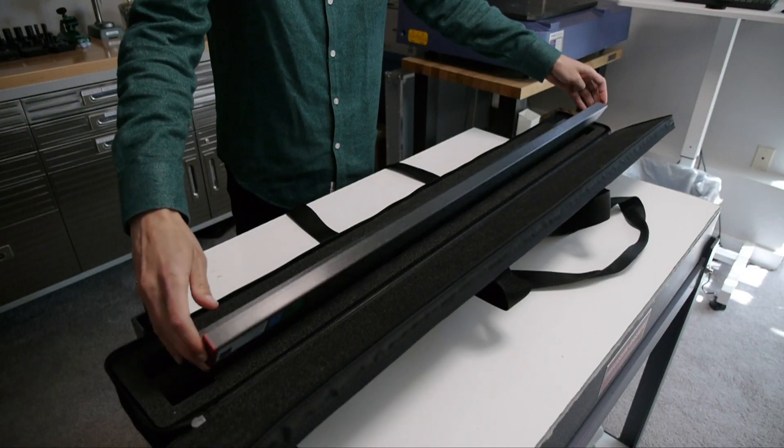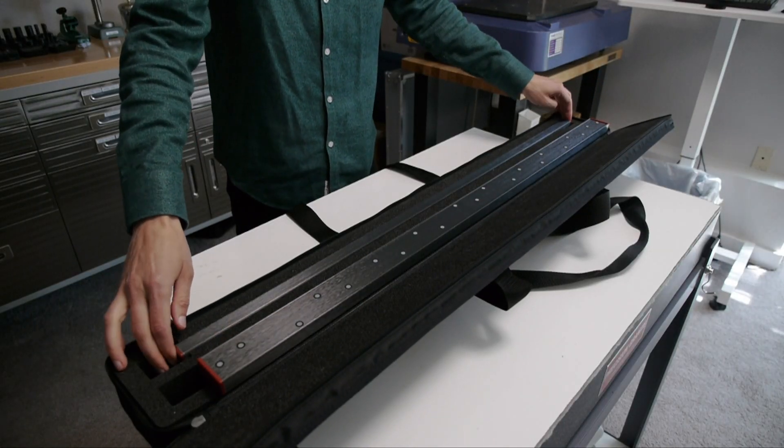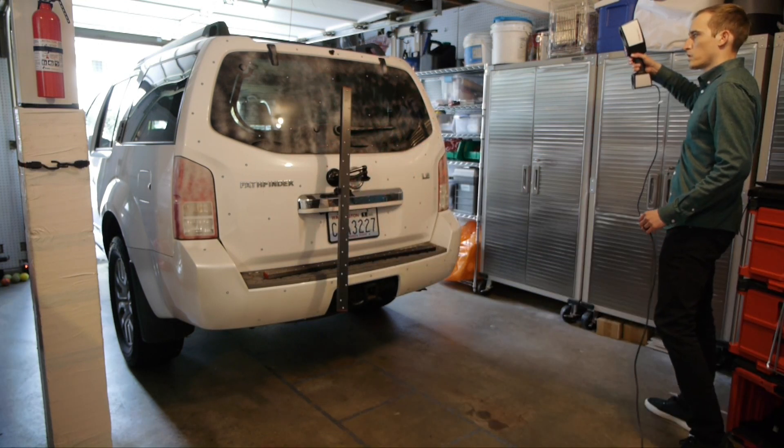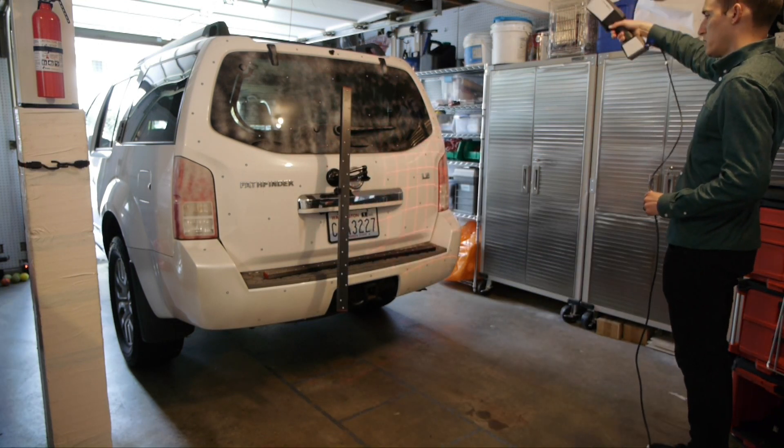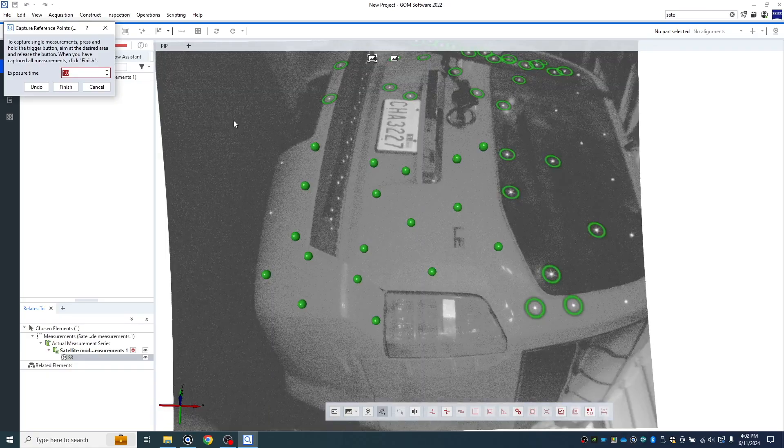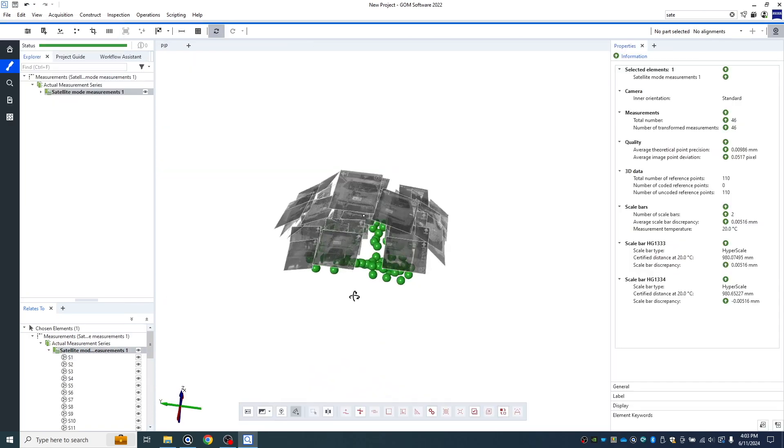When you do that process, you also use scale bars as a part of that process, and that's what scales all of your data. Basically that allows you to get a good, accurate point cloud of all of those target stickers first, and then you can come back in and scan your data.